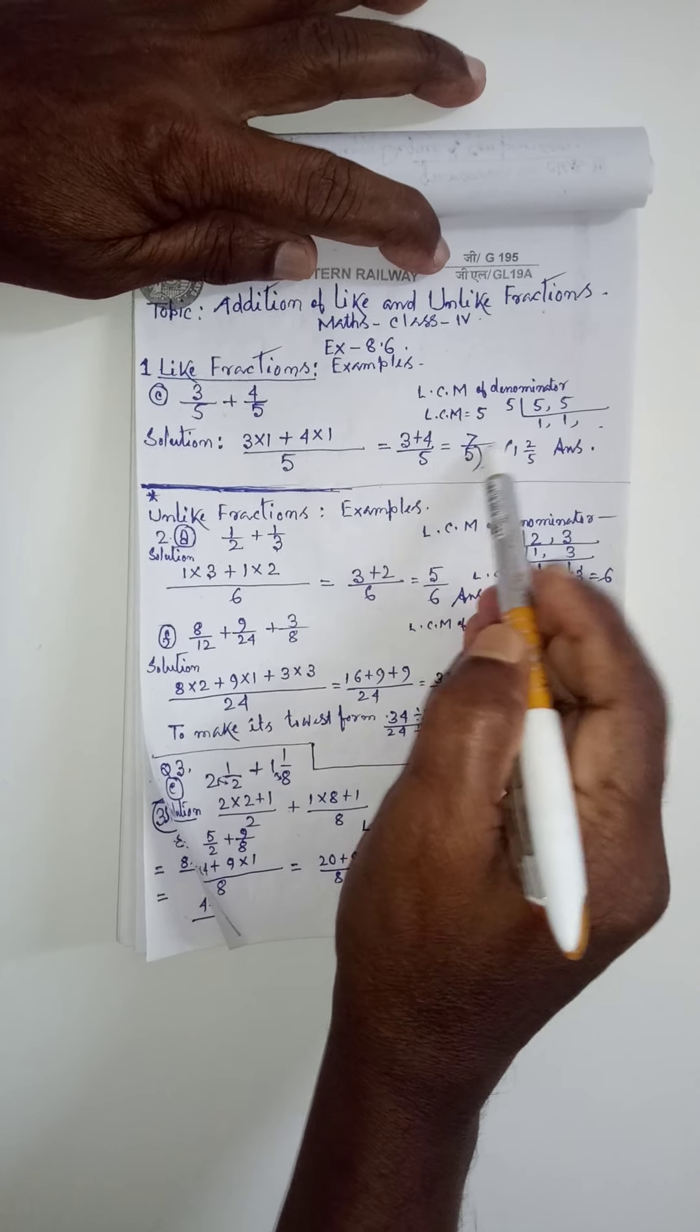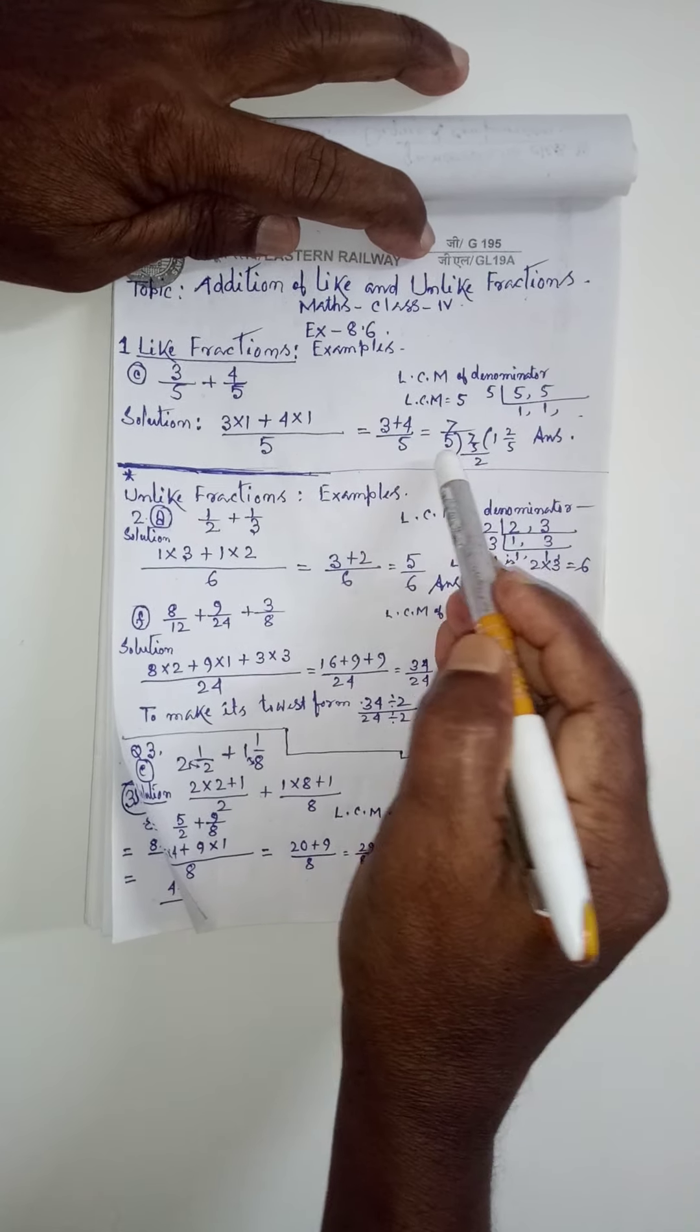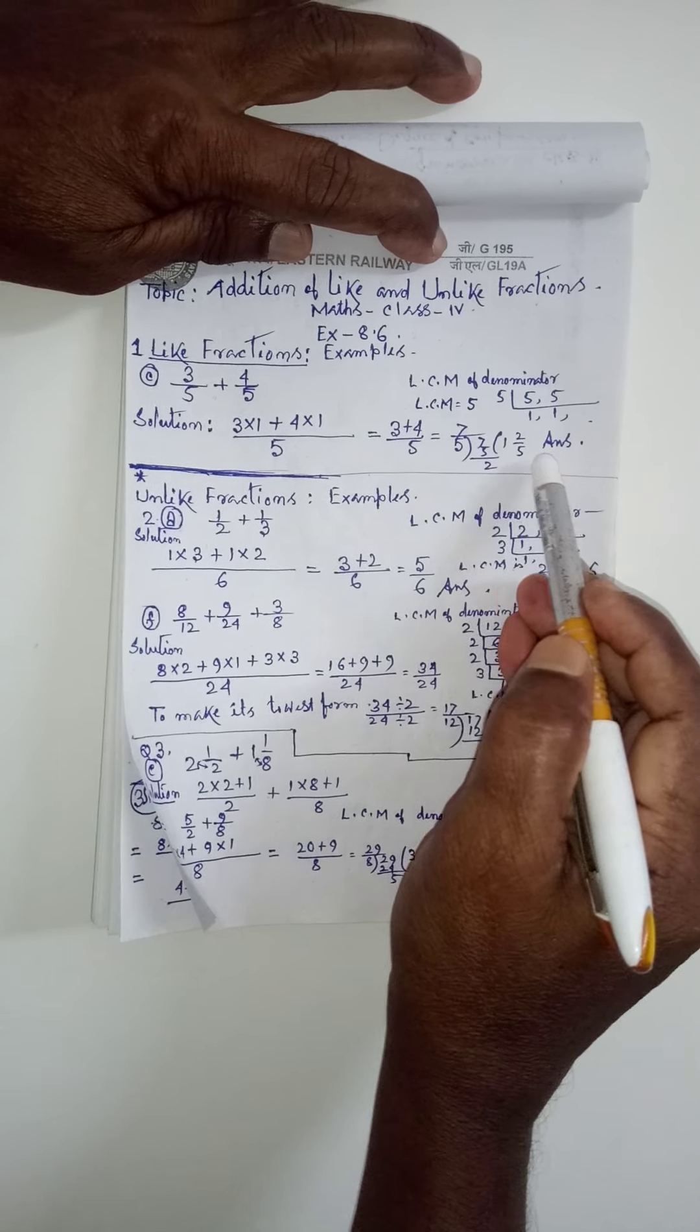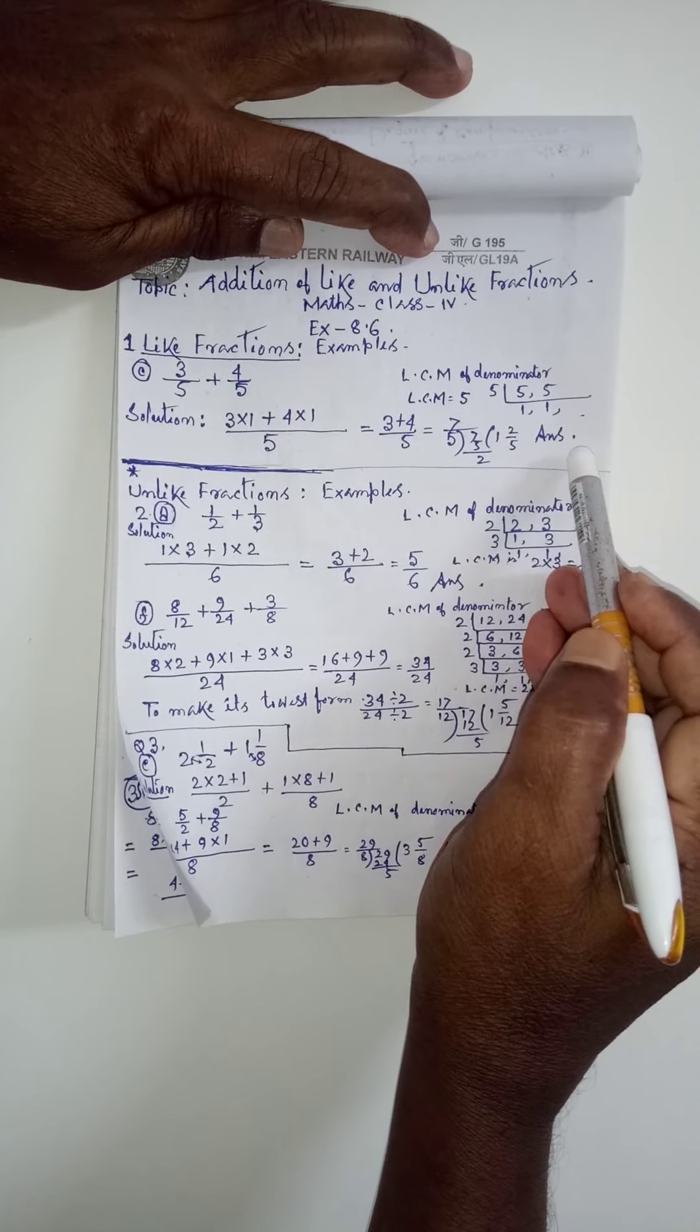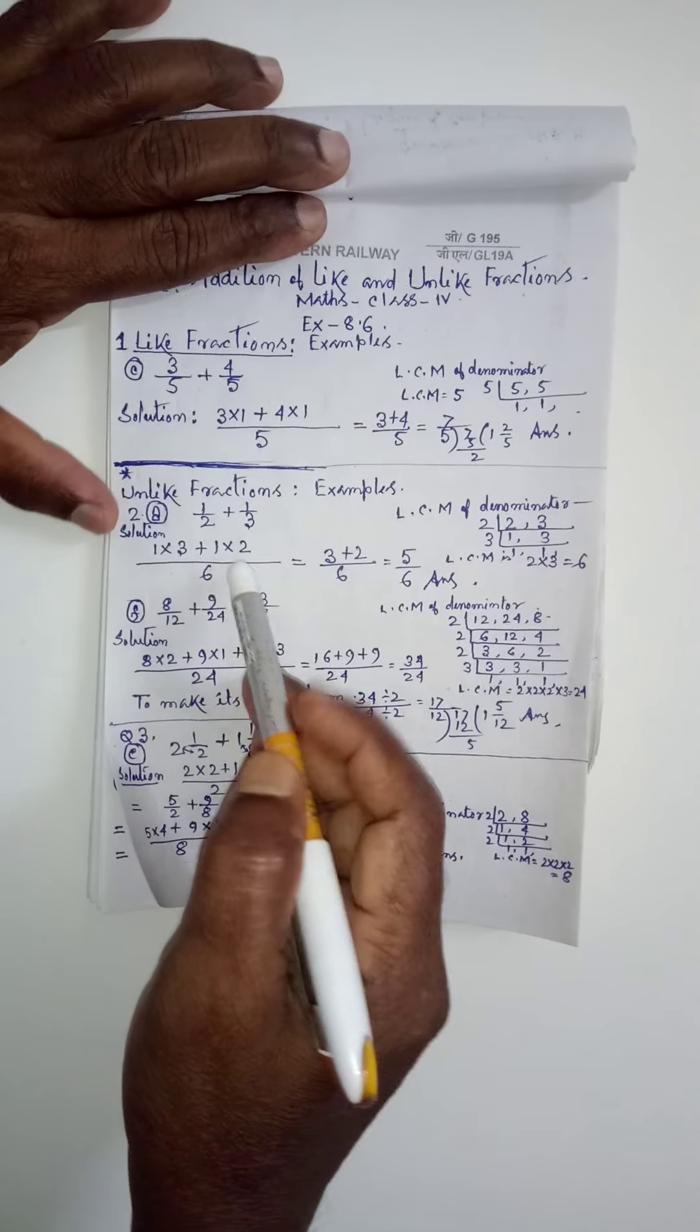See, this 7 by 5, I have made it a mixed fraction. By dividing this one, 1, 2 by 5. Second example, let us see.